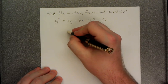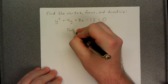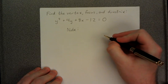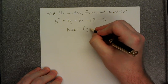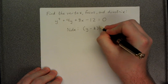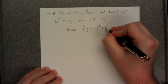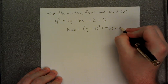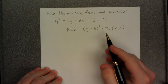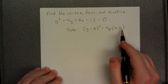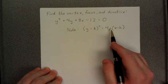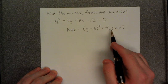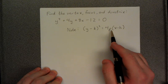First off, we'd like to note to ourselves that this is not the preferred form for a parabola. The preferred form that we like is y minus k, quantity squared, is equal to 4p times x minus h. This is where the vertex is represented by the variables h and k, and p represents the distance from the vertex to both the focus as well as the directrix.